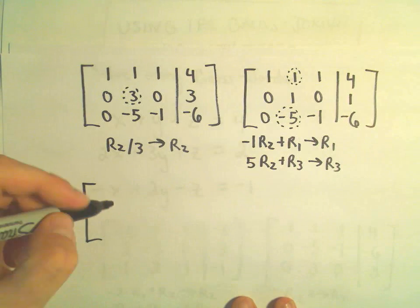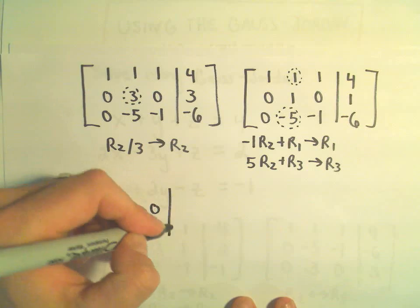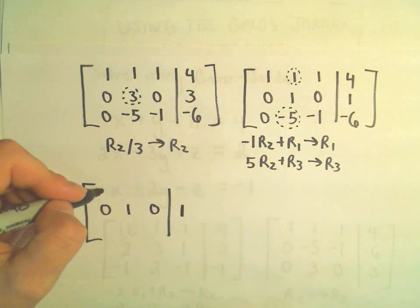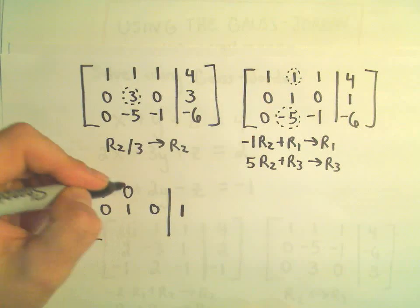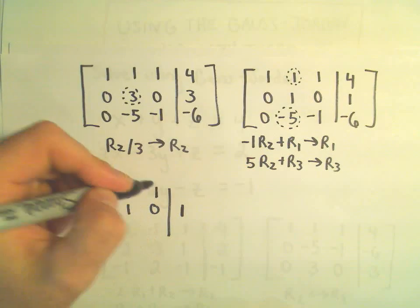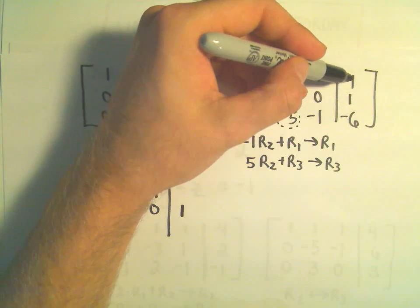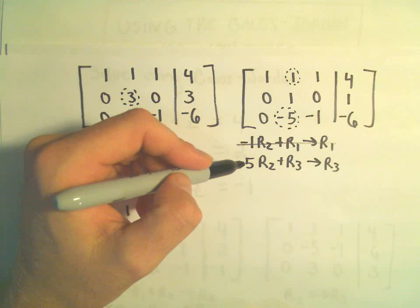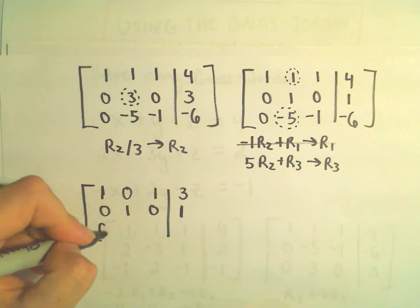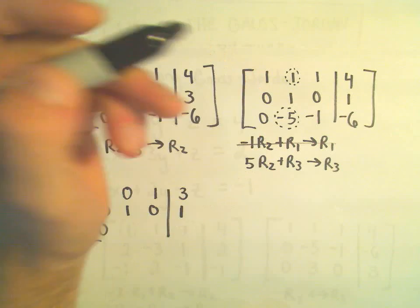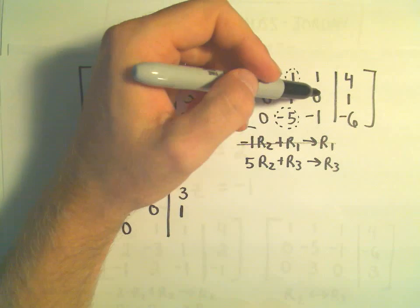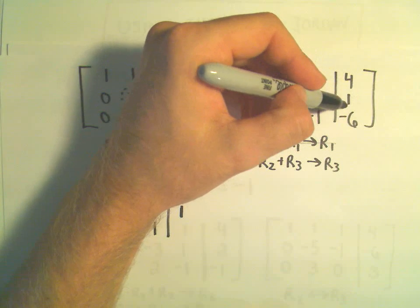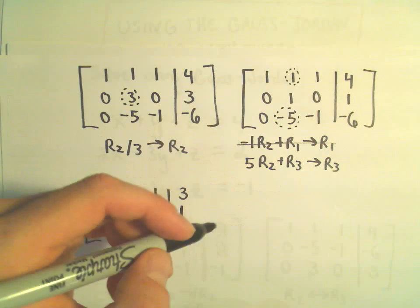Row 2 stays the same. For the new row 1: negative 1 times 0 plus 1 is 1, negative 1 plus 1 is 0, 0 plus 1 is 1, and negative 1 plus 4 is positive 3. For the new row 3: 5 times 0 plus 0 is 0, 5 times 1 plus negative 5 is 0, 5 times 0 plus negative 1 is negative 1, and 5 plus negative 6 is negative 1.